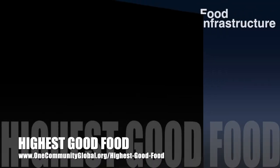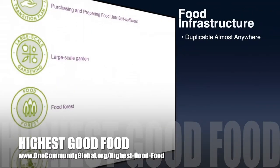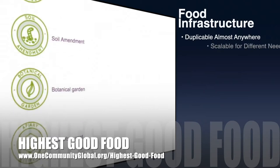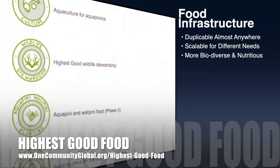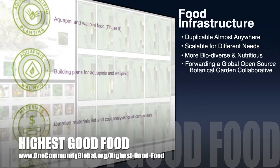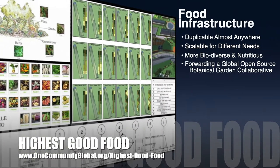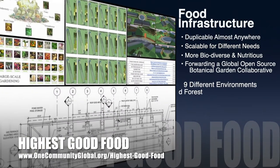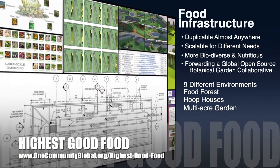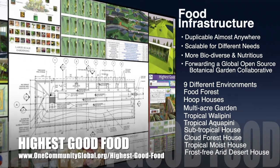One Community's approach to highest good food is duplicable almost anywhere, scalable for different needs, more biodiverse and nutritious, part of forwarding a global open source botanical garden collaborative, and includes nine different free shared and duplicable growing environments.